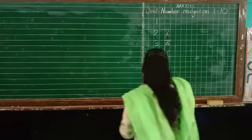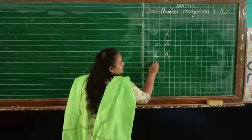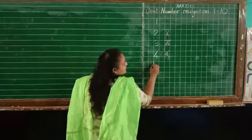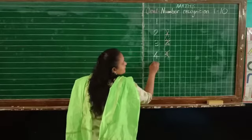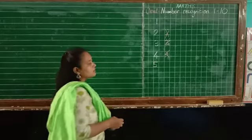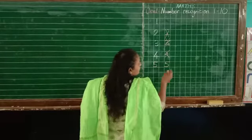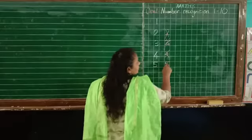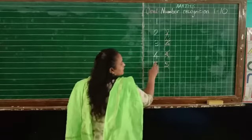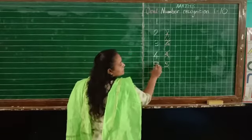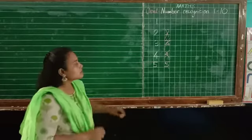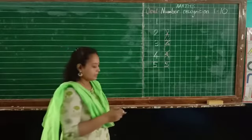Okay, now we will see 5. Standing, tummy, sleep on the top. This is 5. See, if you write 5 like this, then it is wrong. Okay? Standing, tummy, sleep on the top. This is called 5.